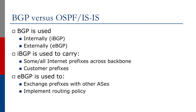BGP, on the other hand, can be used both internally and externally. When it is used internally, it's called iBGP, and it is used for carrying some or all of internet prefixes across the backbone network as well as customer prefixes. When BGP is used externally, it is called eBGP, and it is used to exchange prefixes with other ASs as well as implement routing policy.